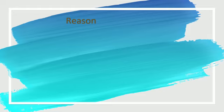So the basic reason for liquid junction potential is that in two compartments the electrolyte concentration varies — both are different. One is more concentrated, the highly concentrated solution, and the second is dilute.